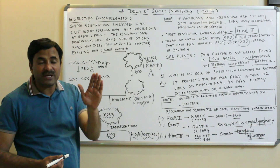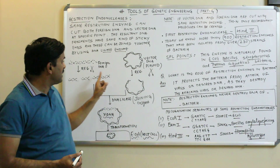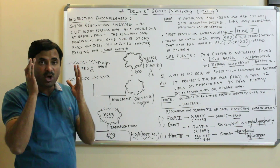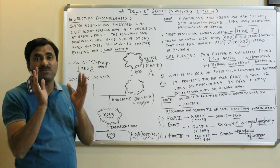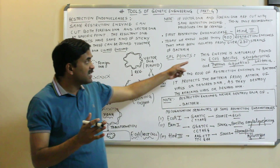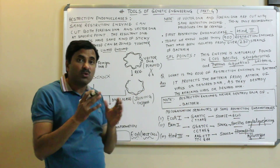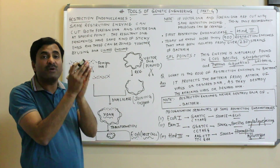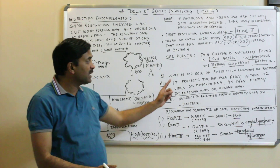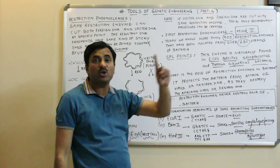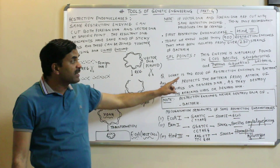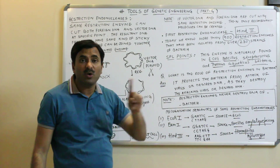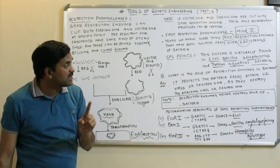We know restriction enzymes are used as molecular scissors in genetic engineering and we cut foreign DNA and vector DNA with their help. But a key question arises: if restriction enzymes are used as molecular scissors but are also found in bacteria, what is the role of these enzymes within the bacterial cell? Always remember — they protect the bacteria from the attack of viruses or foreign DNA.